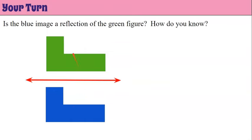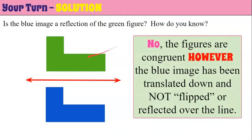Here's another one. Is the blue image a reflection of the green figure? The answer is no. The green figure has been translated down to the blue location — it's a slide or translation. If we folded on this line of reflection, the figures would not overlap. They appear congruent; however, the blue image has been translated and not reflected over that line of reflection.